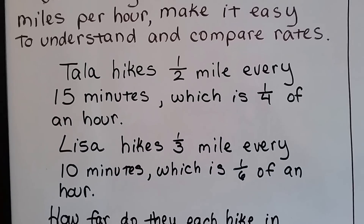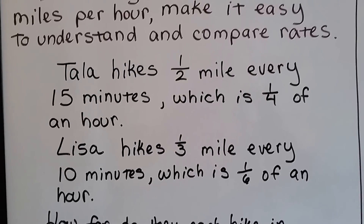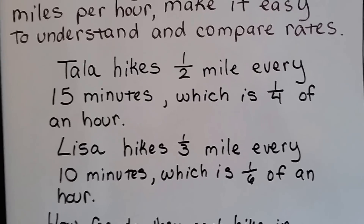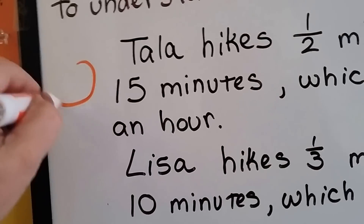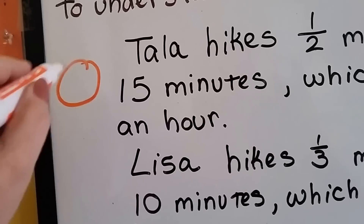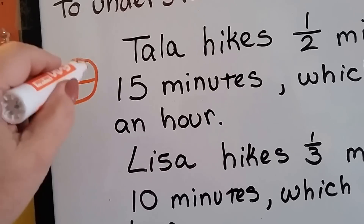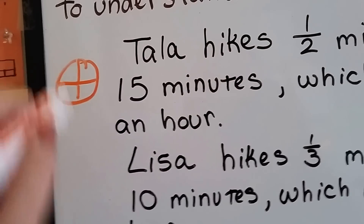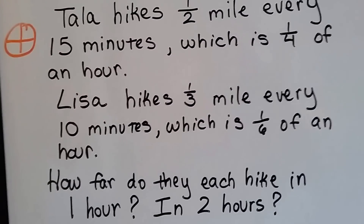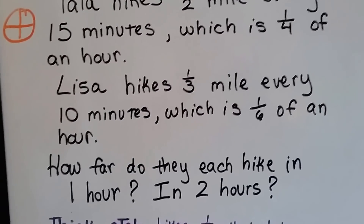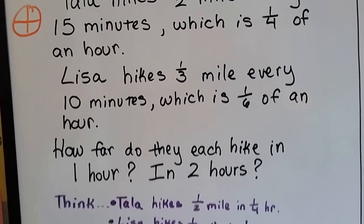Tala hikes a half mile every 15 minutes, which is one-fourth of an hour. If we have a clock, we have an entire hour as the whole circle and we break it up — each one of these is 15 minutes. Lisa hikes a third of a mile every 10 minutes, which is one-sixth of an hour.